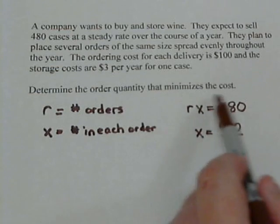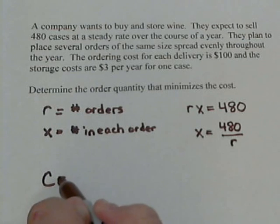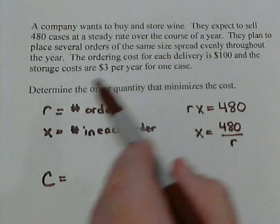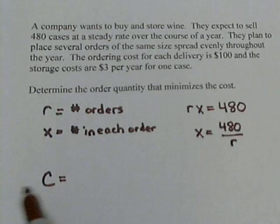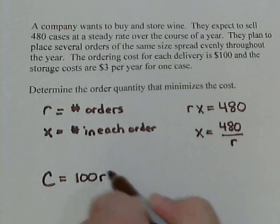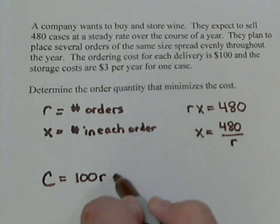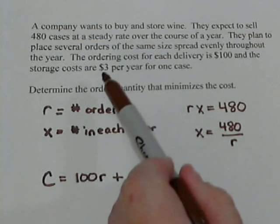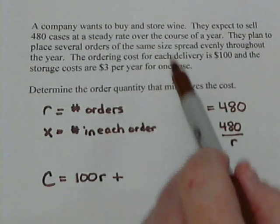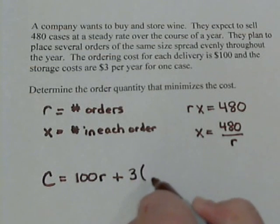So we want to minimize the cost. We want to keep this as cheap as possible. So we need our cost equation. Well, we know each shipment is $100, and we know we're going to make R number of shipments. So we're going to have to spend $100 for each shipment. Then we know that we're going to have to store it. Storage is $3 per year for one case.